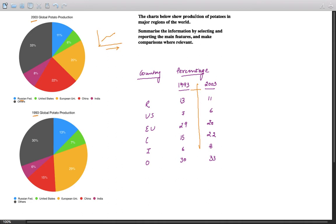Let us proceed with the answer. The question is about production of potatoes in different regions of the world and there are six regions: Russian Federation, United States, European Union, China, India, and others. Others are a combination of various countries, consequently we won't be giving it much attention. The question is summarize the information by selecting and reporting the main features and make comparisons where relevant.